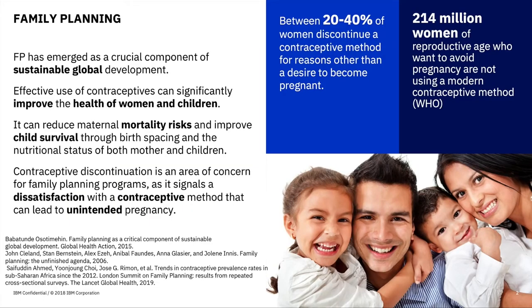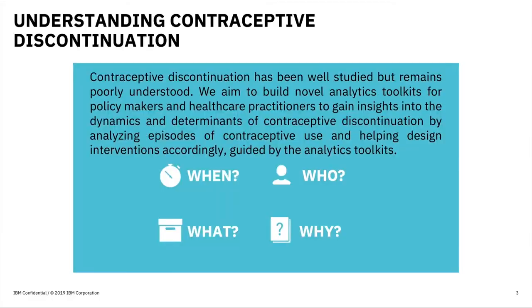Our work addresses the problem of family planning, which is a crucial sustainable development goal. Specifically, we apply artificial intelligence techniques to better understand the issue of contraceptive discontinuation. Between 20% to 40% of women discontinue a contraceptive method due to some dissatisfaction, which in turn can lead to high rates of pregnancy. To address this issue, we built an analytics toolkit for policy makers and healthcare practitioners to gain insights into the dynamics of contraceptive uptake behavior. We do this by analyzing episodes of contraceptive use and discontinuation, so practitioners can better understand which subpopulations are most prone to discontinuation.